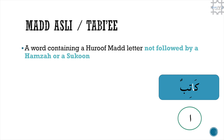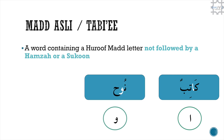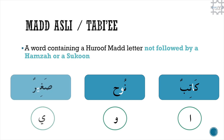The first example is an alif preceded by a fatah: Kaatibun. The second example is a waw preceded by a damma: Nuh. And the third example is a ya preceded by a kasra: Sogheerun.